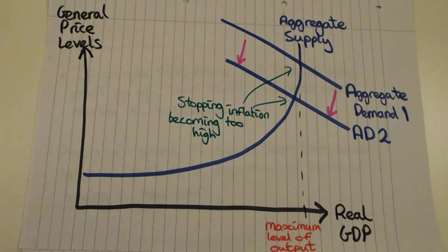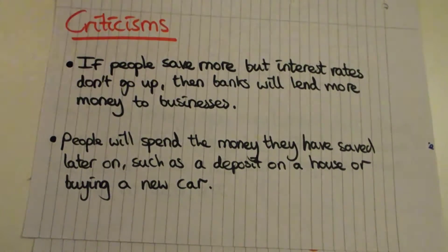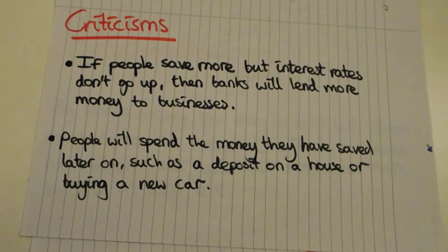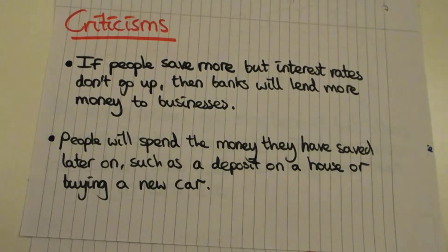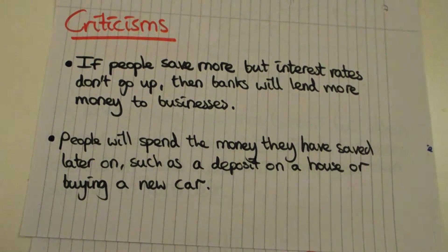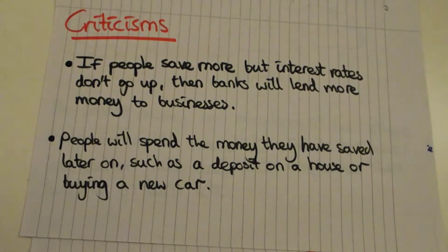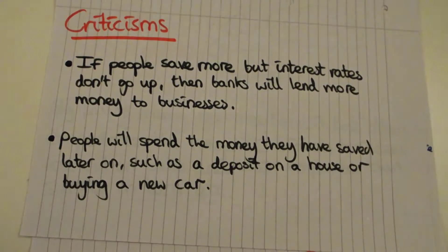There are a few criticisms of the paradox of thrift. One is that if people save more, banks have more money to lend, especially if interest rates don't change — so surely banks will lend more to businesses. However, I think this is wrong because banks typically only have about 10 to 20 percent of the money available to them compared to what people have saved. So if everyone in the UK had 10 billion pounds in savings accounts, banks would likely only have around 1 to 2 billion actually available.